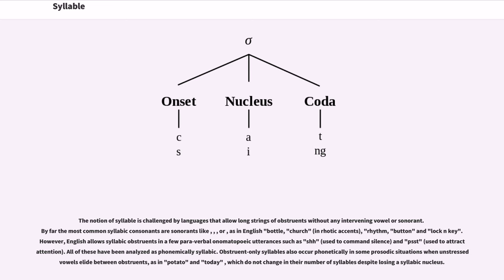However, English allows syllabic obstruents in a few paraverbal onomatopoetic utterances such as shh and psst. All of these have been analyzed as phonemically syllabic. Obstruent-only syllables also occur phonetically in some prosodic situations when unstressed vowels elide between obstruents, as in potato and today, which do not change in their number of syllables despite losing a syllabic nucleus.